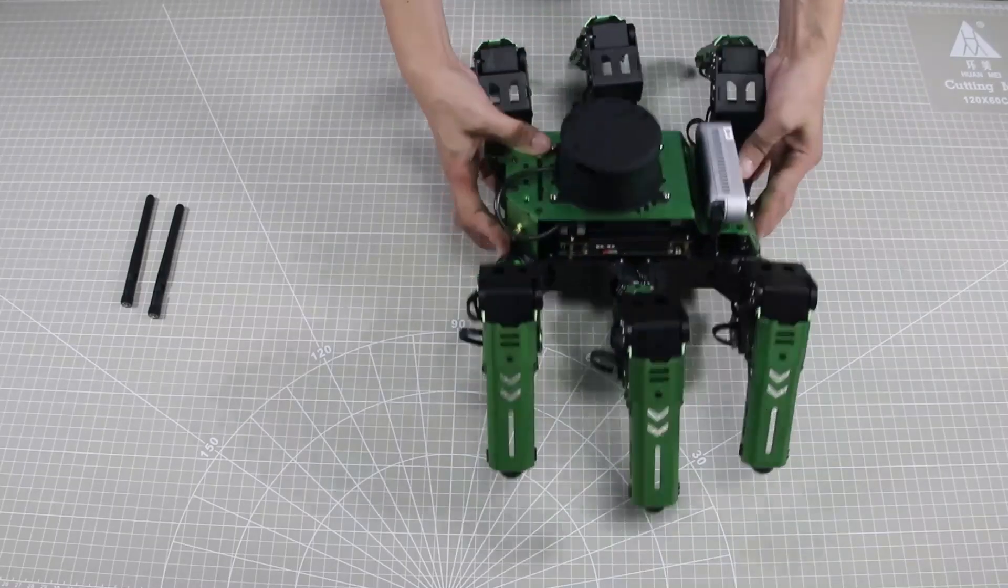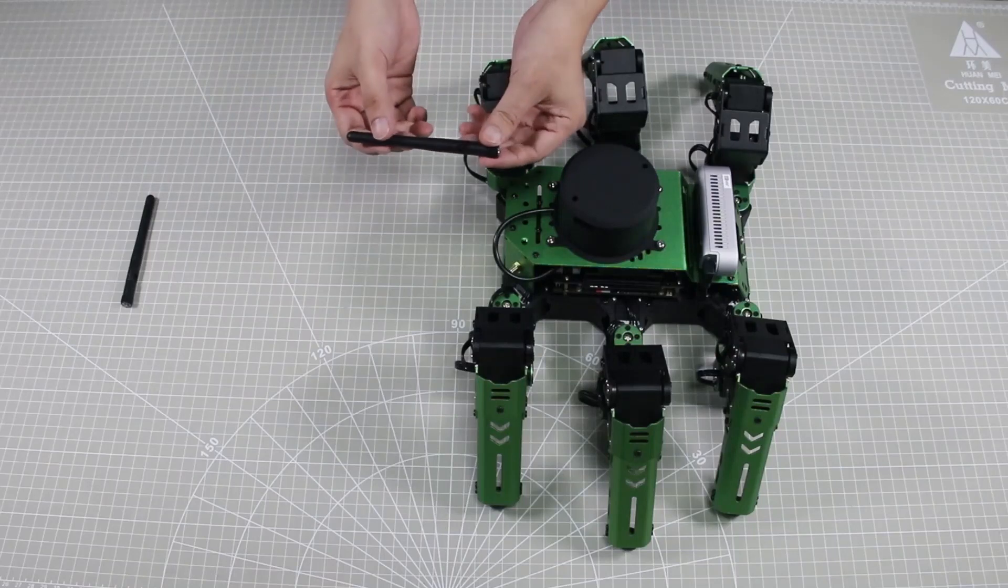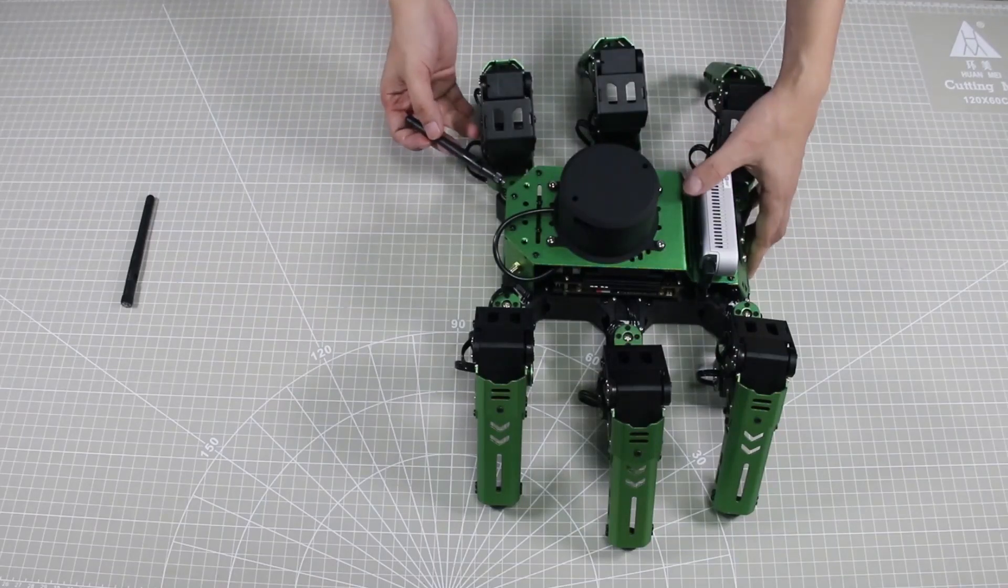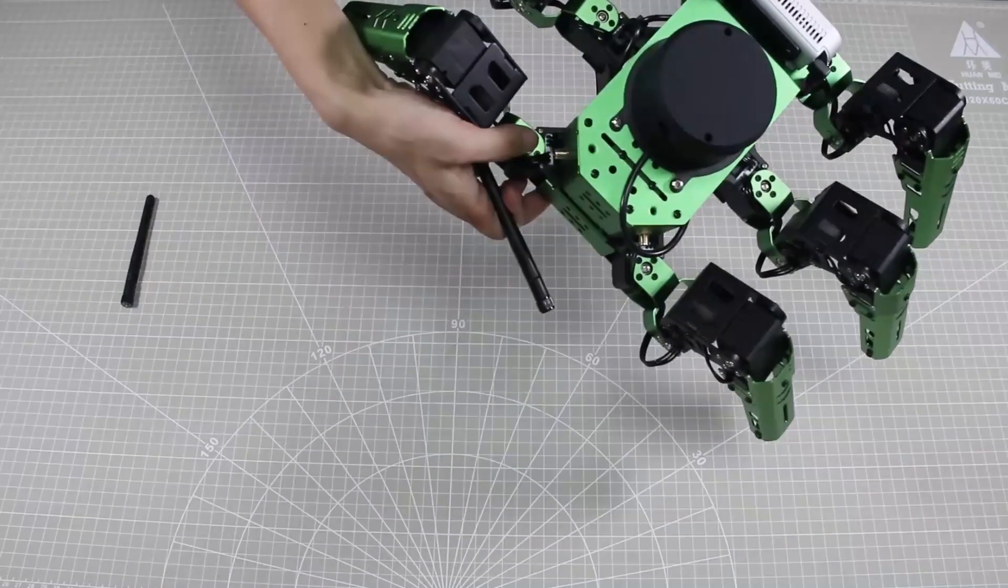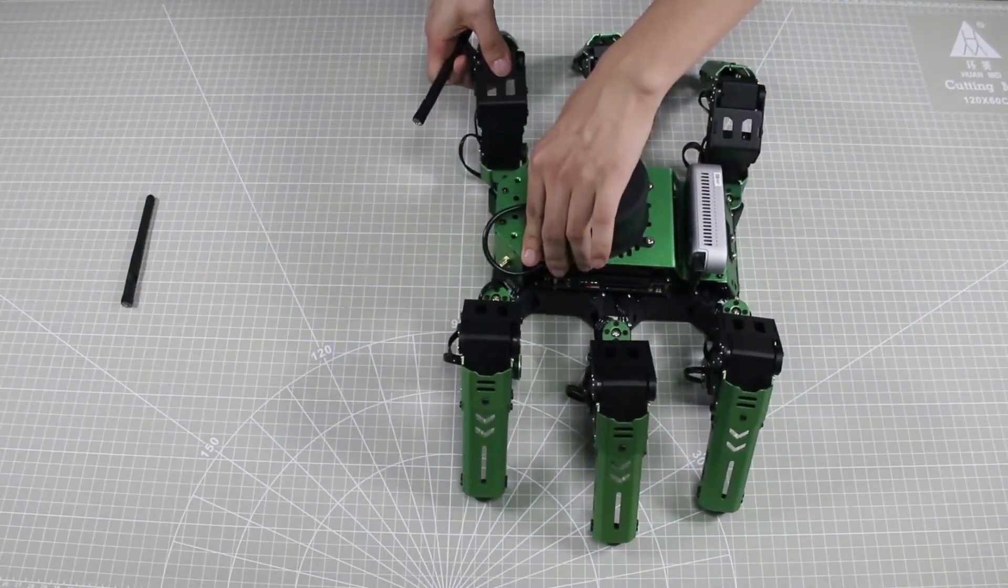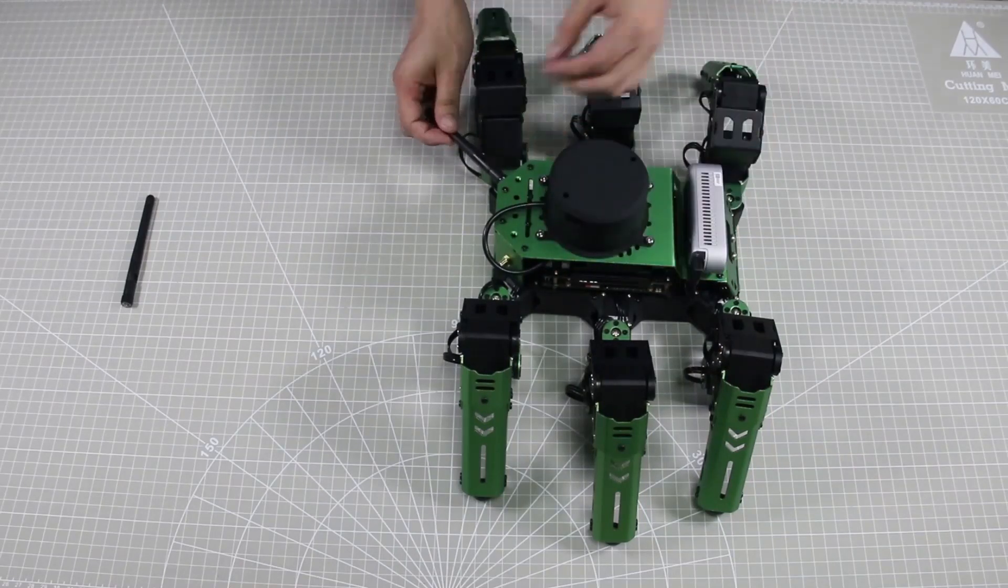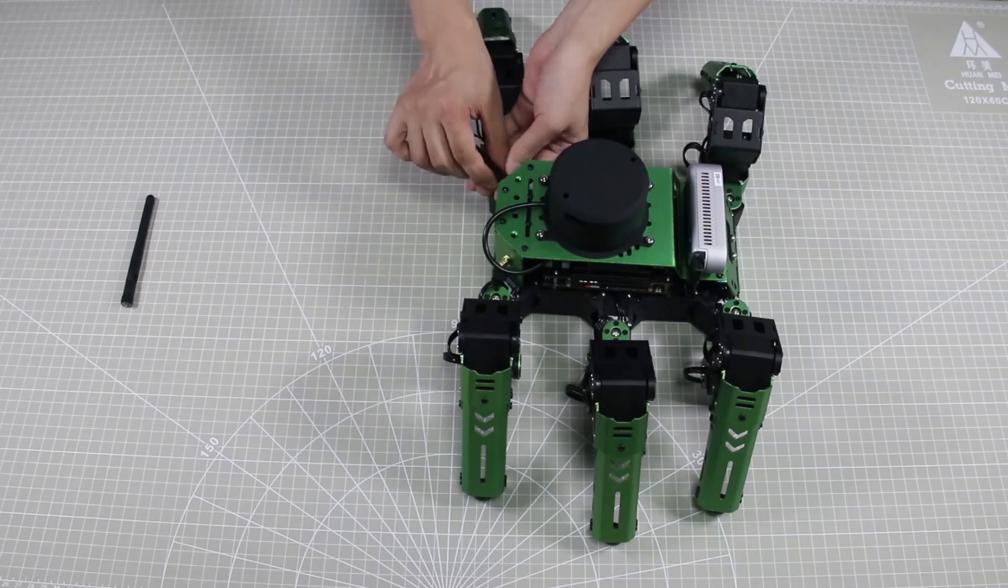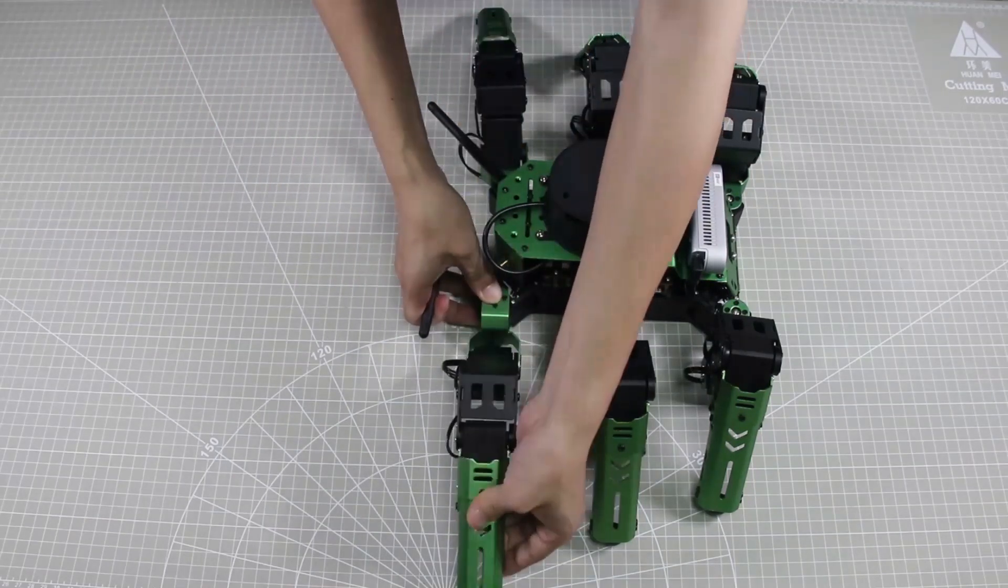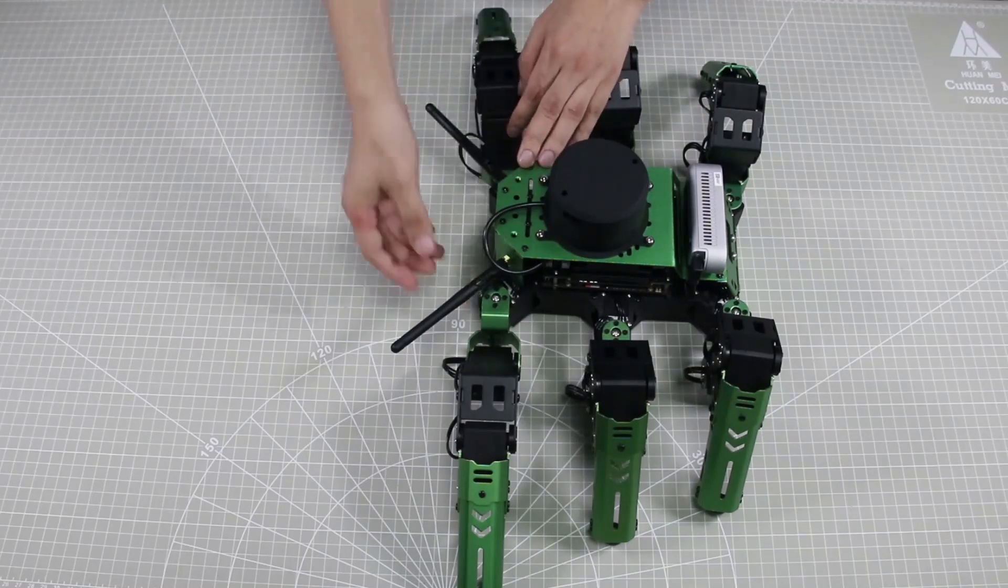Do not place the robot upside down or on its side. Scoot the antenna in these two parts, then make them vertical.